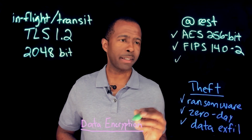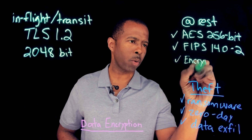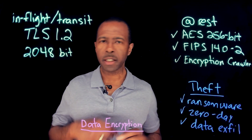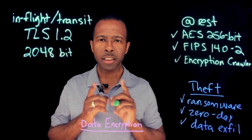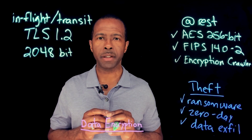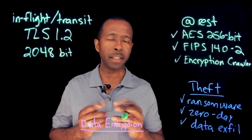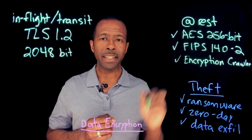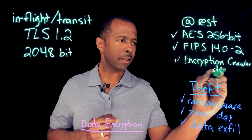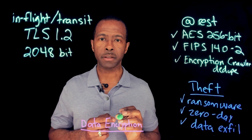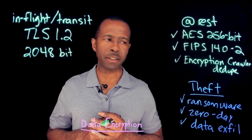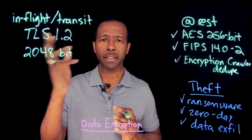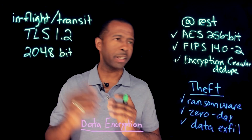One thing I like is having some type of solution — what we call an encryption crawler — that is scanning the storage and looking for older files and unencrypted files so that it can encrypt data that is unencrypted. This gives you that added layer of intelligence to make sure that all of the data sitting within that storage repository will be encrypted in a deduplicated fashion, which also gives you total cost of ownership savings. So to recap: make sure your solution has data encrypted in flight, in transit, and also at rest.